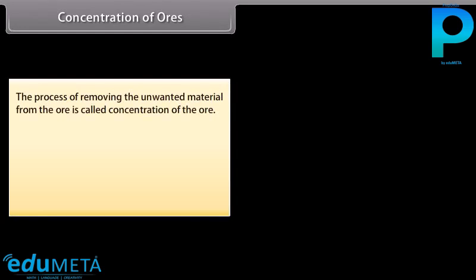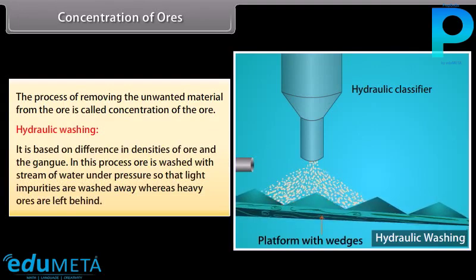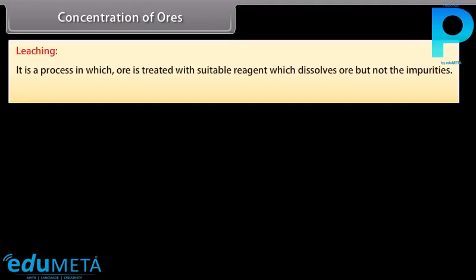Concentration of ores: The process of removing unwanted material from the ore is called concentration of the ore. Important methods include hydraulic washing, which is based on the difference in densities of ore and gang. In this process, ore is washed with a stream of water under pressure so that light impurities are washed away whereas heavy ores are left behind. Leaching is a process in which ore is treated with a suitable reagent which dissolves the ore but not the impurities.